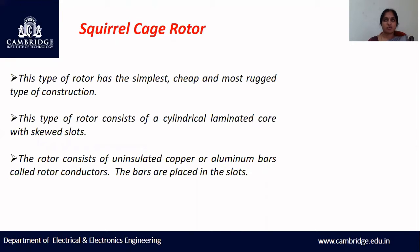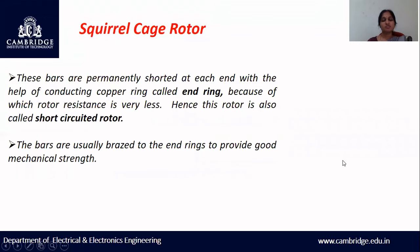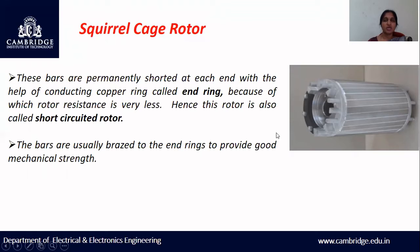The squirrel cage rotor has the simplest, cheapest, and most rugged construction. It consists of a cylindrical laminated core with skewed slots, where conductors are placed. The rotor consists of uninsulated copper or aluminum bars called rotor conductors, placed in the slots. These bars are permanently short-circuited at each end with copper end rings, making the rotor resistance very low. This structure looks like the cage of a squirrel, which is why it is called a squirrel cage rotor. The bars are usually braced to the end rings to provide good mechanical strength.